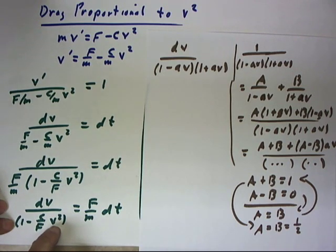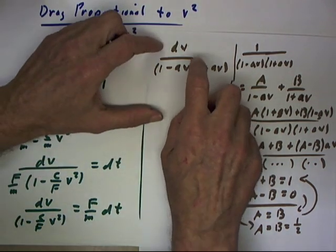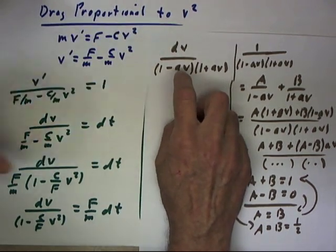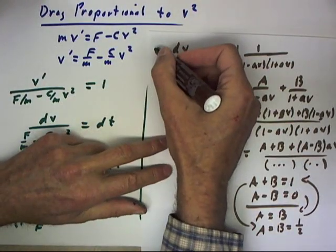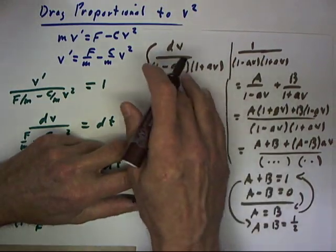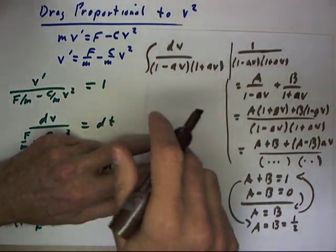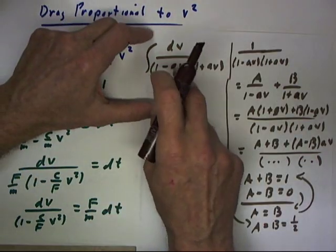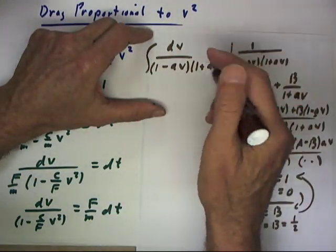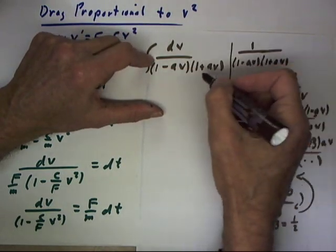Both multiples of v, I'm going to look at the integral of dv over 1 minus av times 1 plus av, that being the sum and difference of two terms. We have the difference of two squares factors into the sum and the difference of the square roots of the two terms.